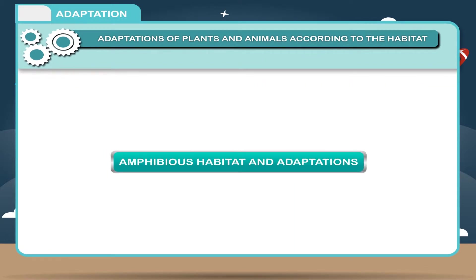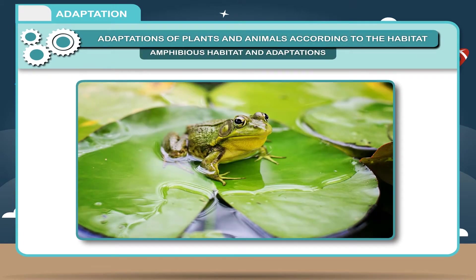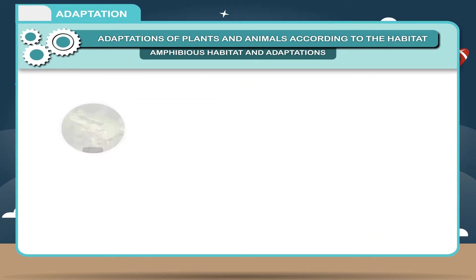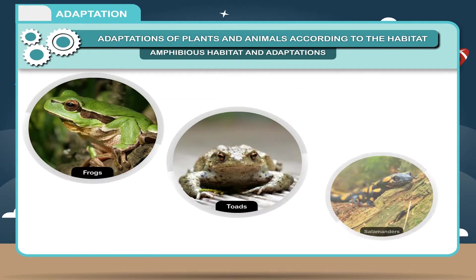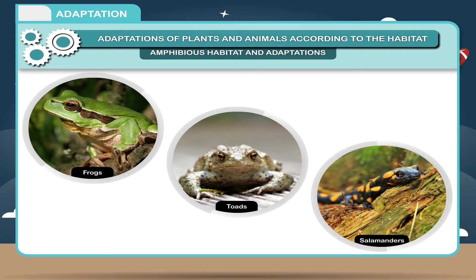Amphibious Habitat and Adaptations: The animals which can live both on land as well as water are called amphibious animals. Common amphibious animals are frogs, toads and salamanders. They have these adaptations.